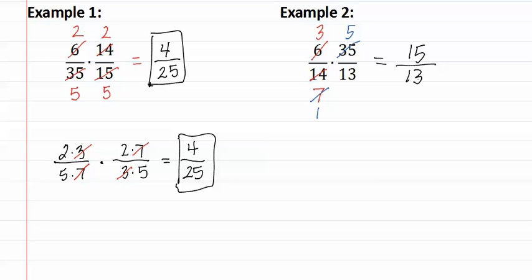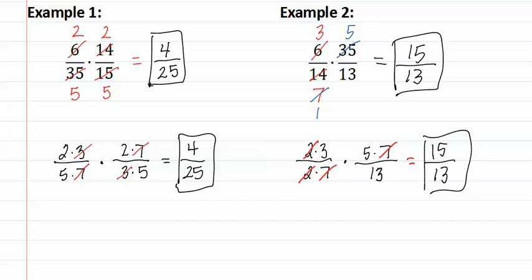Remember if you are not comfortable with the seeing method, find the prime factorization of each number. The prime factorization of six is two times three, fourteen is two times seven, thirty-five is five times seven, and thirteen is simply thirteen. You then divide out all common factors, which will give you the same answer as we got previously, fifteen over thirteen. Remember when multiplying fractions, it is easiest to reduce and then multiply numerators, and then multiply denominators to get your final answer.